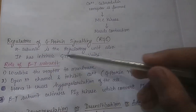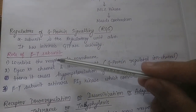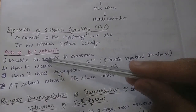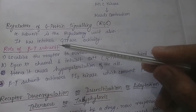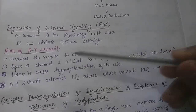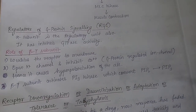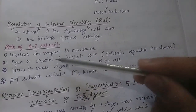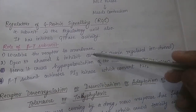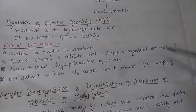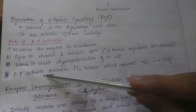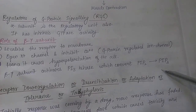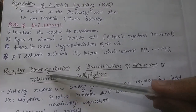The alpha subunit is the regulatory unit because it has intrinsic GTPase activity. Now regarding the role of the beta-gamma subunit: it binds with the alpha subunit and localizes the receptor to the membrane, helping GPCR bind to the membrane. It also opens K+ channels and inhibits calcium channels - this is an example of G protein-regulated ion channels. Additionally, the beta-gamma subunit activates PI3 kinase, which converts PIP2 into PIP3.